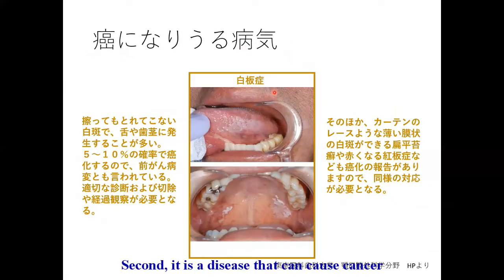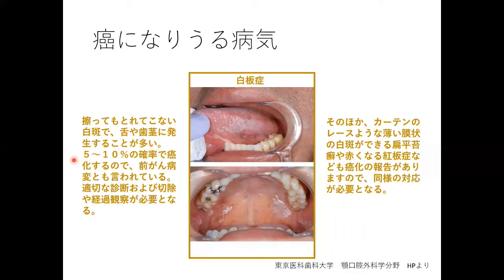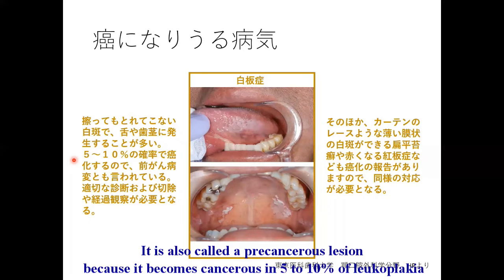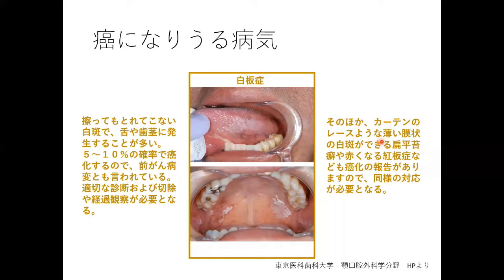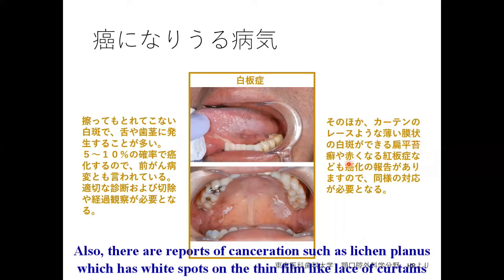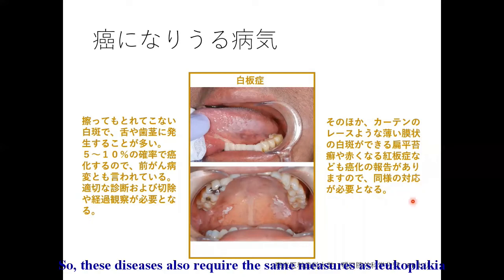Second, leukoplakia is a disease that can cause cancer. It is vitiligo that cannot be removed by rubbing and often occurs on the tongue and the gums. It is also called a pre-cancerous condition because it becomes cancerous in 5 to 10 percent of cases, and appropriate diagnosis and follow-up or treatment are required. In addition, there are related conditions such as oral lichen planus, which shows white spots in a lace-like pattern, and erythroplakia, which shows red spots. These diseases also require the same management as leukoplakia.